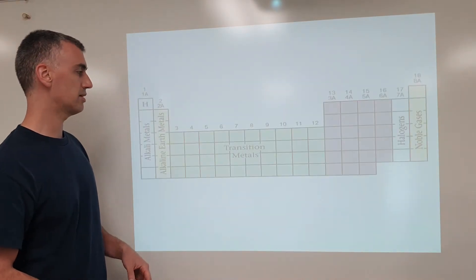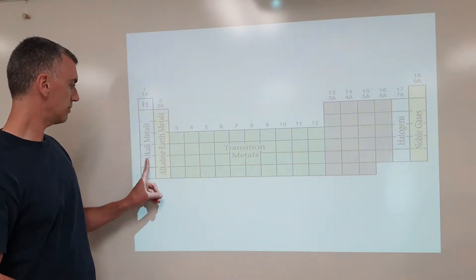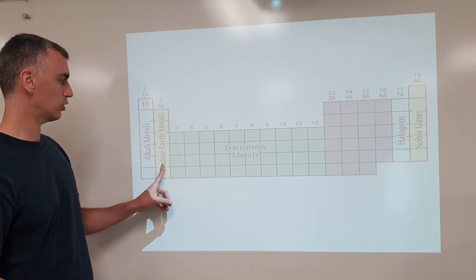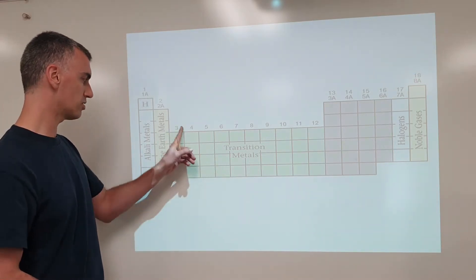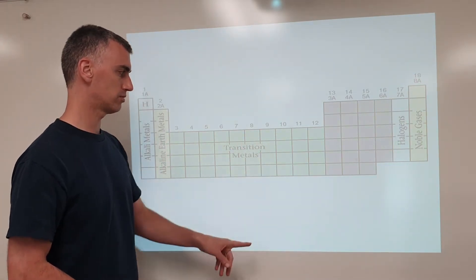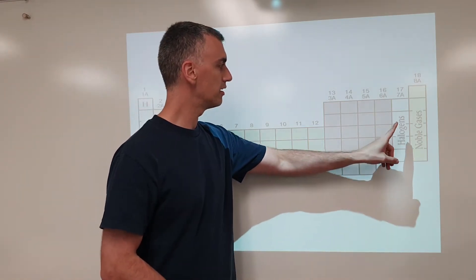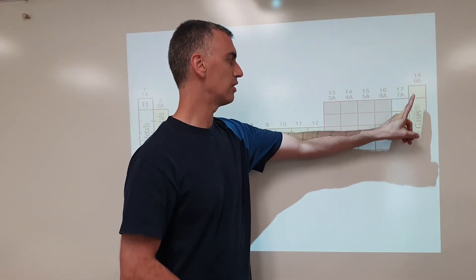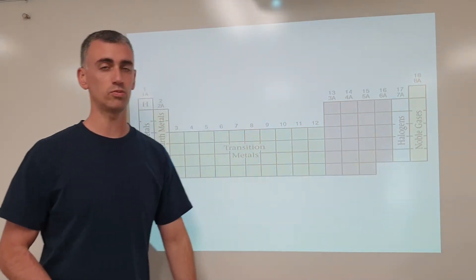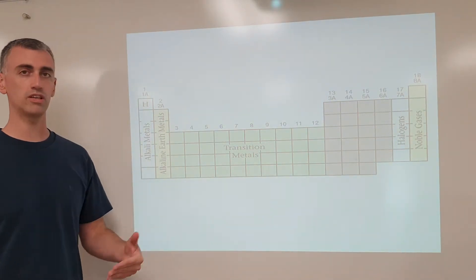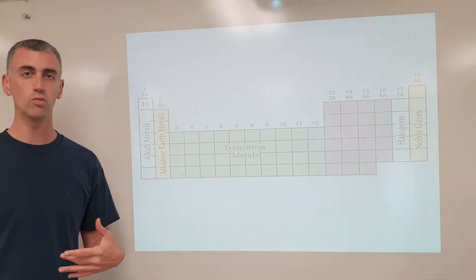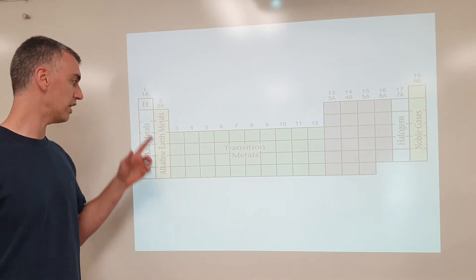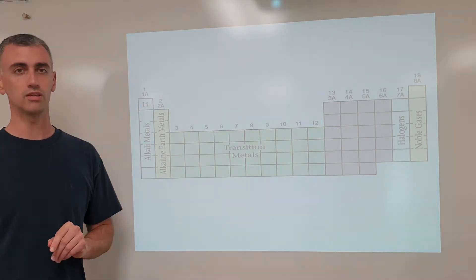So let's look at some. Alkali metals, alkaline earth metals, transition metals which is a whole group of vertical groups, and then halogens and noble gases are the primary ones we want to look at to make sure that you the viewer understands what their chemical properties are and why we've grouped them together into the same group.